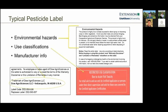Labels also contain environmental hazard statements — for example, that a product is highly toxic to bees or fish, or that runoff is likely. Some products are restricted use, meaning the individual must have a special license to obtain them. The label also includes manufacturer information about who produced the product.